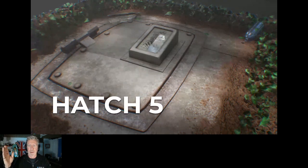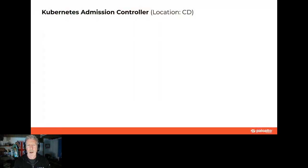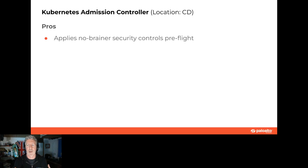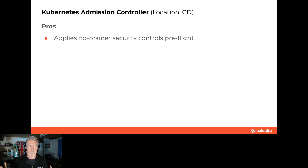Hatch five — this is a Kubernetes admission controller location and deployment. The pros: it's applying the no-brainer security controls pre-flight. If you've gotten all the way to the point where Kubernetes is checking what you're doing, I hope you've done some stuff beforehand. The admission controller for Checkov doesn't check everything — it checks the stuff that's super bad. Think of it like a bouncer at a club.